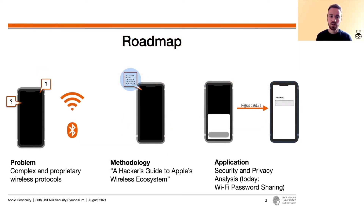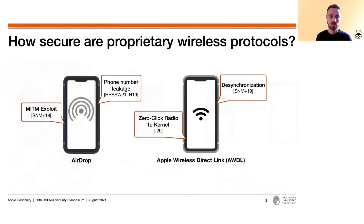We start this presentation by defining the actual problem we want to address: how secure are wireless protocols? We start with two short examples. First, AirDrop, a service to share files between devices without using an internet connection. In 2019, a machine-in-the-middle attack was discovered that allowed an attacker to receive and modify all files transmitted between devices over AirDrop. In the same year, it was first disclosed that AirDrop leaks the phone numbers and email addresses of the sender, an issue that has not been fixed until today.